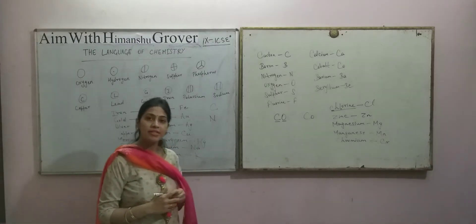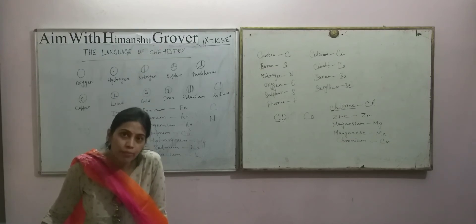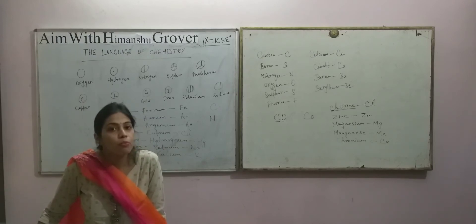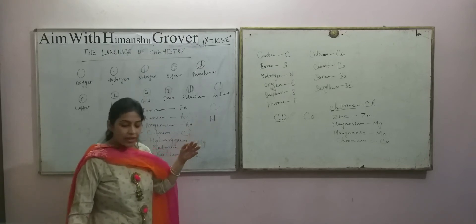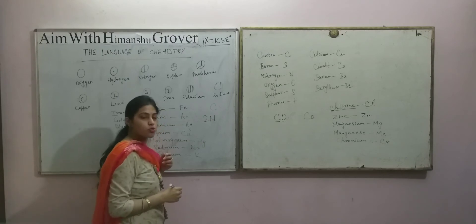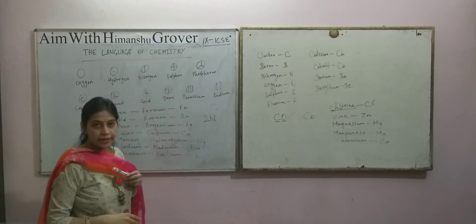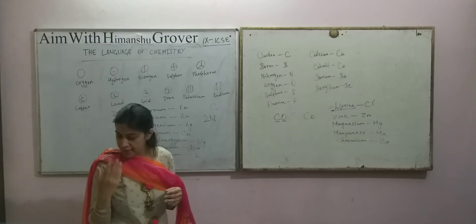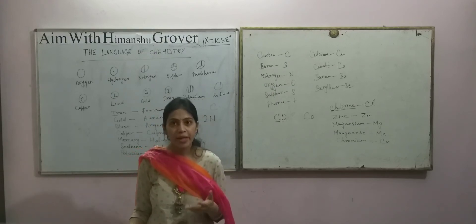The second significance: a symbol represents the atom of the element. Third, the relative atomic mass or molar mass of the element is also represented by its symbol. For example, the atomic mass of carbon is 12 and nitrogen is 14. Writing 2N means two atoms of nitrogen, with a molar mass of 28 (2 × 14). The atomic symbol makes it easy to remember, read, write, or speak the name of the element, and saves time and space.